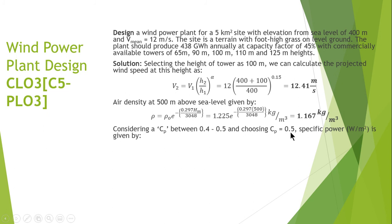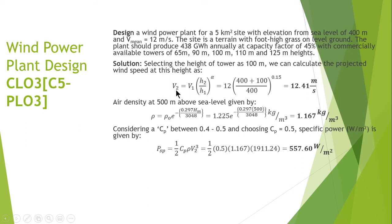We consider a rotor efficiency of 40 to 50 percent and choose Cp = 0.5. The specific power Psp is then calculated using the formula: Psp = 0.5 × Cp × ρ × v2³. With v2 = 12.41 m/s, ρ = 1.167 kg/m³, and v2³ = 1911.24, the specific power equals 557.60 watts per meter squared.